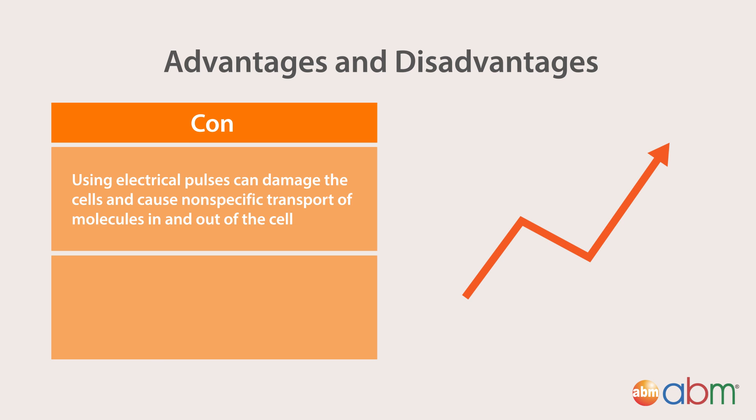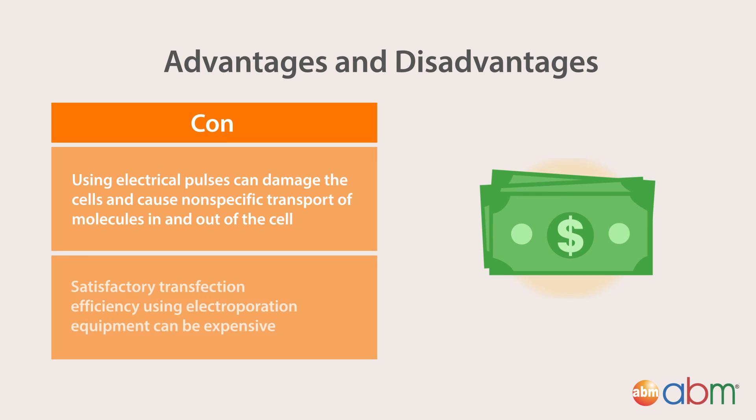For instance, the optimal voltage, number of pulses, pulse width, buffer, and reagent combinations are all factors that will affect the electroporation outcome. Therefore, satisfactory transfection efficiency using electroporation equipment can be expensive.